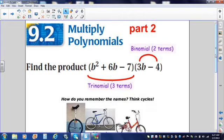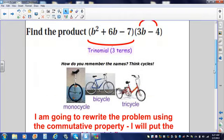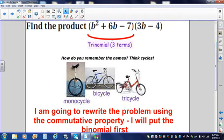Remember, there's an easy way to keep track of it. A monomial is like a monocycle, one term. A binomial is like a bicycle, two terms, two tires. A trinomial, which we have right here. Three terms, three wheels.